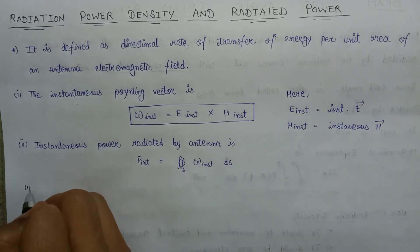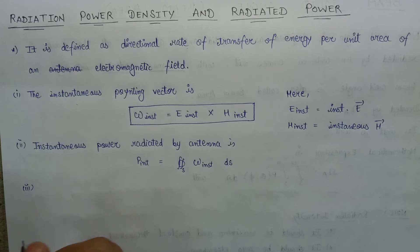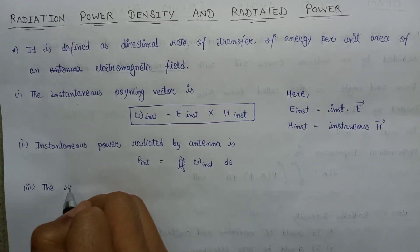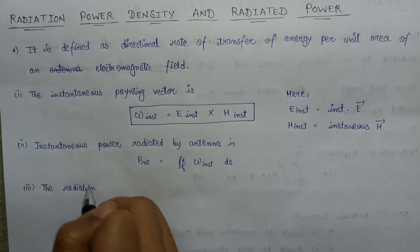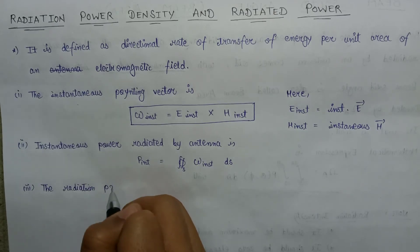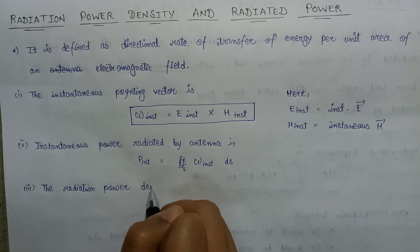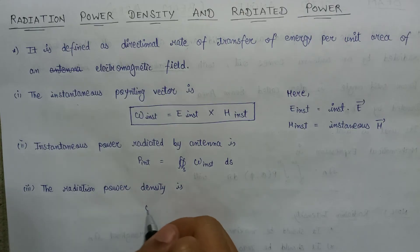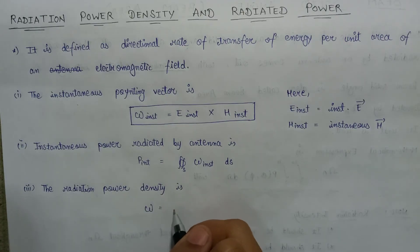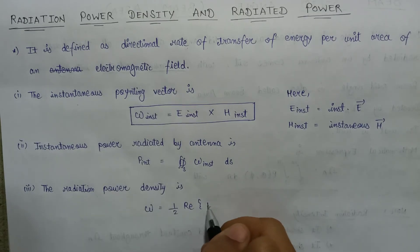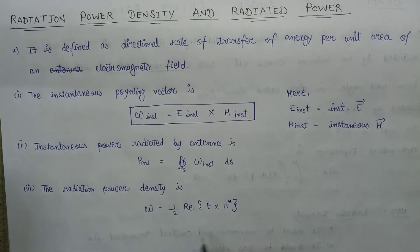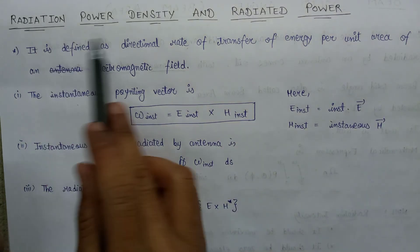Moving on to the third step, that is radiation power density. The radiation power density is denoted by W, where the expression for W is equal to half into the real part of E cross H asterisk. This is one of the most important formulas.